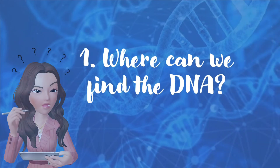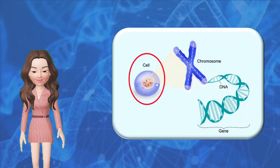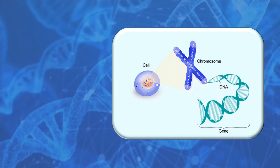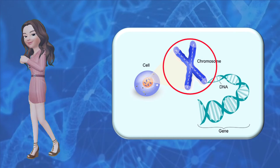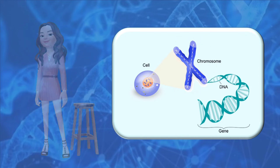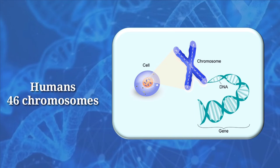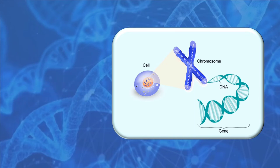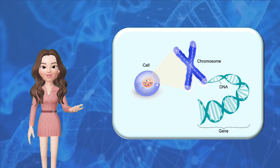Where can we find the DNA? Inside the cell, there is a nucleus. And inside the nucleus, there are chromosomes. Chromosomes are thread-like structures which carry hereditary information. A normal human being has a total of 46 chromosomes. And inside the chromosomes, we can find the DNA.